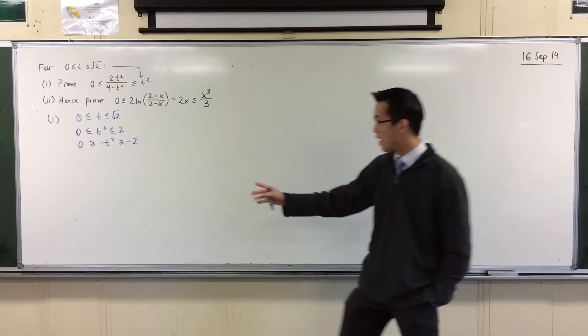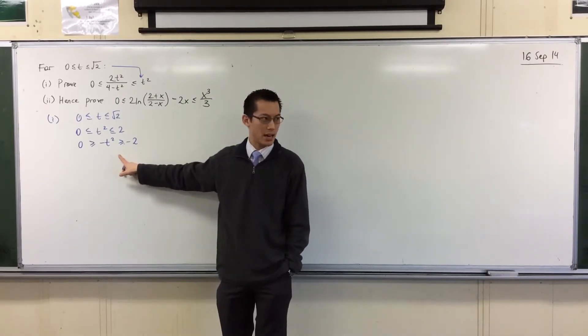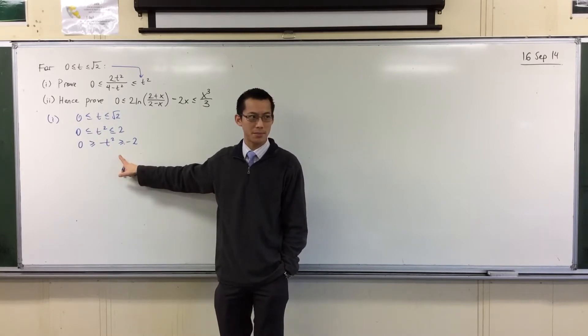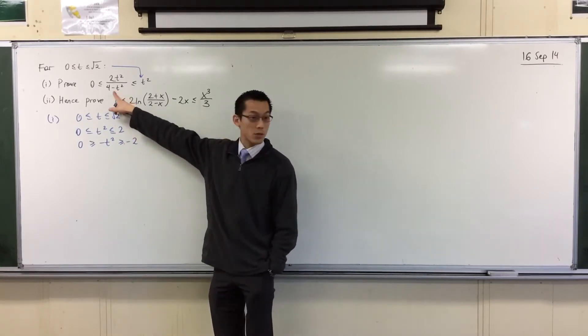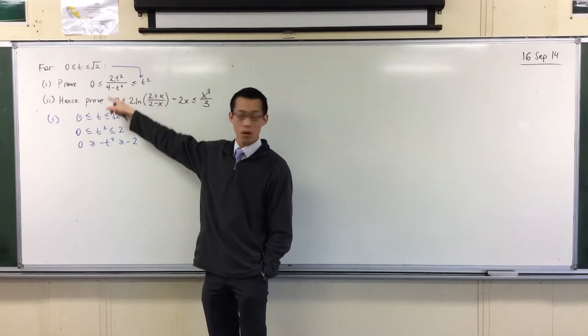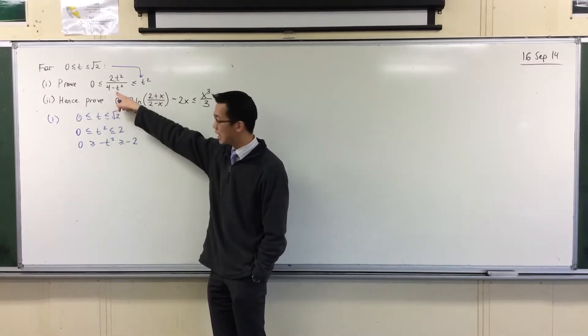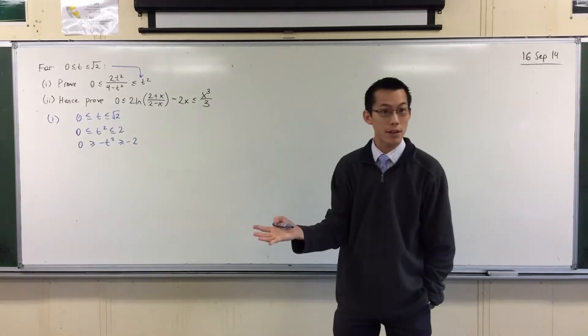But as you will see in a second, the inequalities are going to flip back the way that I want them to. So, at this point, I've got a minus t squared. Why do you think I did that? Why do you think I went in that direction? It's because I have a minus t squared here. That's what I'm working toward. Okay, so to get from here to here, my next step would be, I guess, I add four to everything.